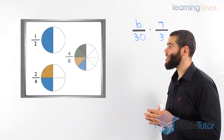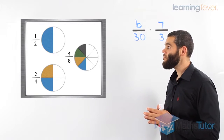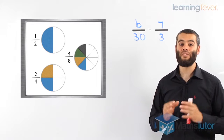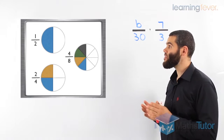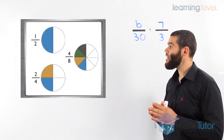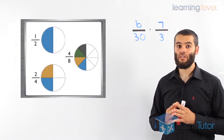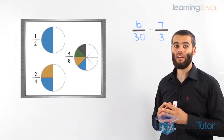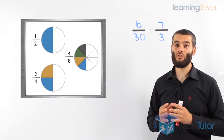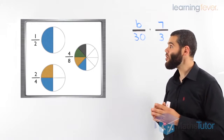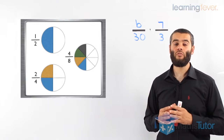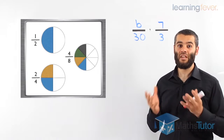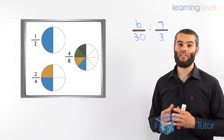Let's look at a third example — the diagram there with a circle. Now this circle has been divided into eight parts, four of which have been shaded. So four out of the eight have been shaded. But if we look closely, it has the same amount shaded as the top two circles as well. So one over two, two over four, and four over eight are all equivalent fractions. They have the same value, but they are written differently.